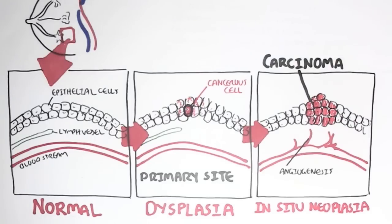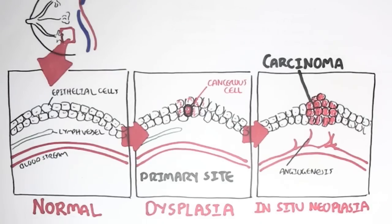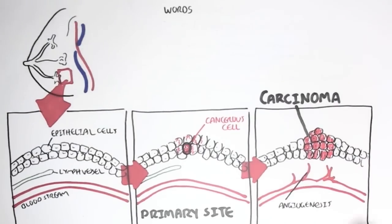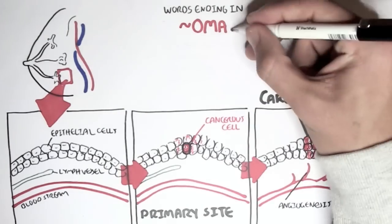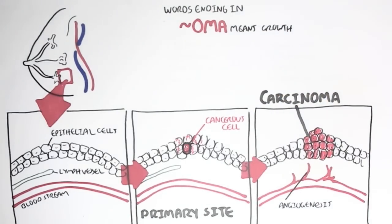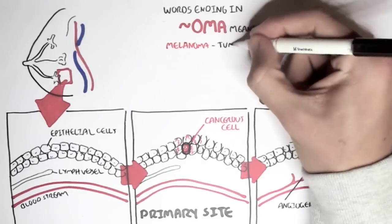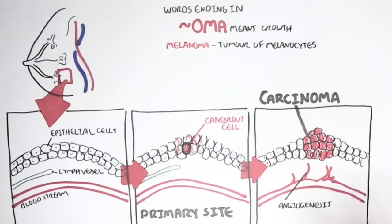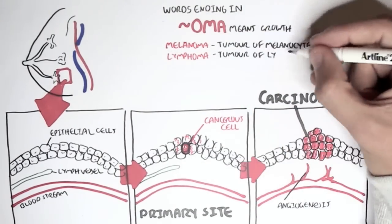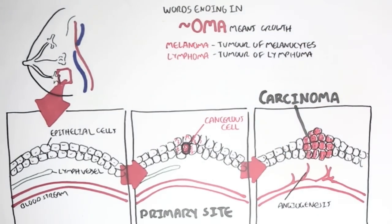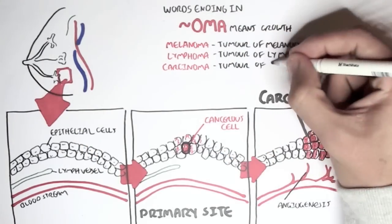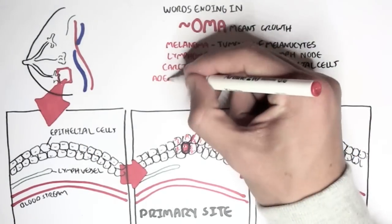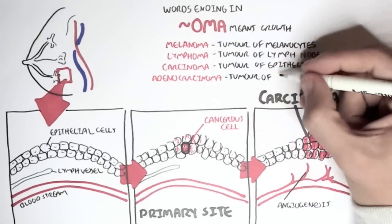Let's learn a bit more about the terminology of cancer. Words ending in '-oma' mean growth. For example, melanoma means new growth or tumor of melanocytes. Lymphoma means tumor of the lymph node.